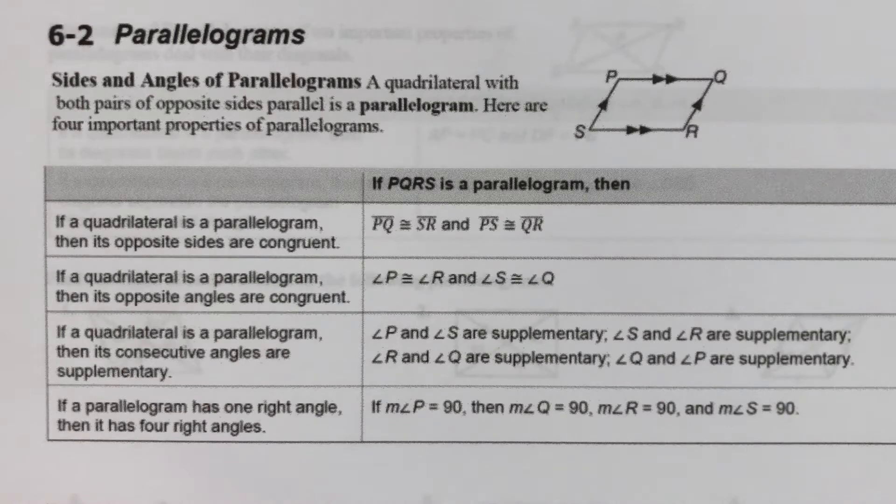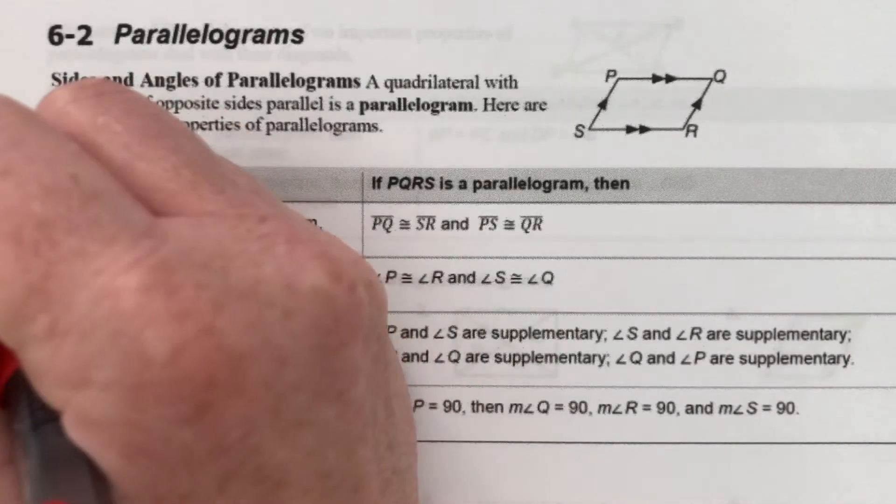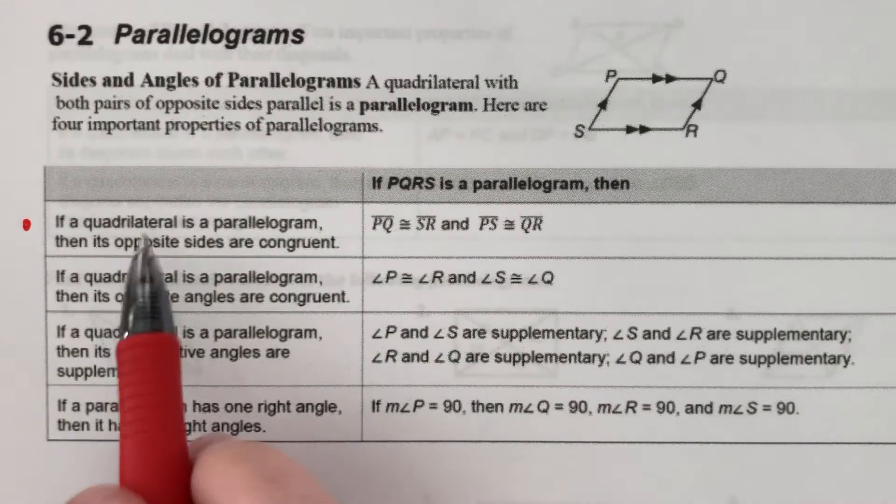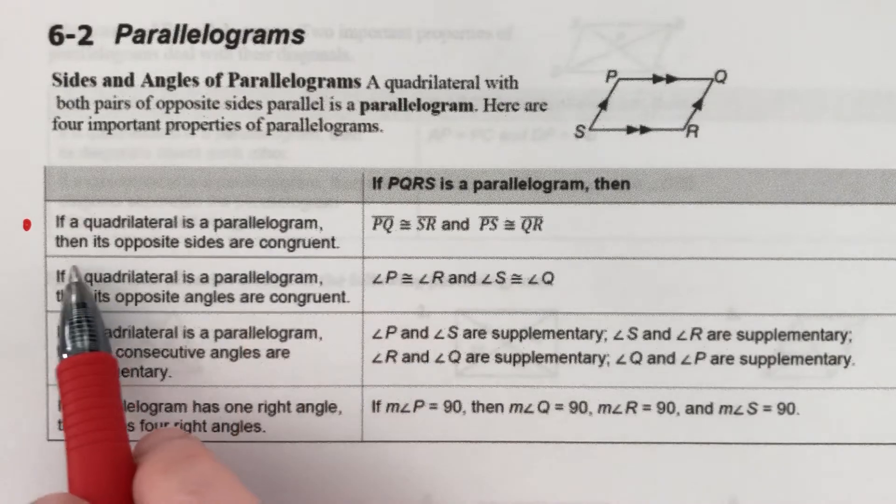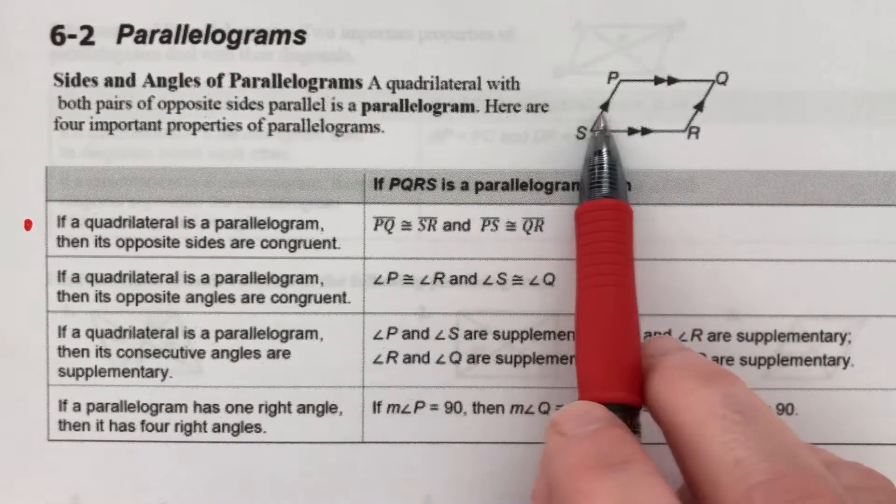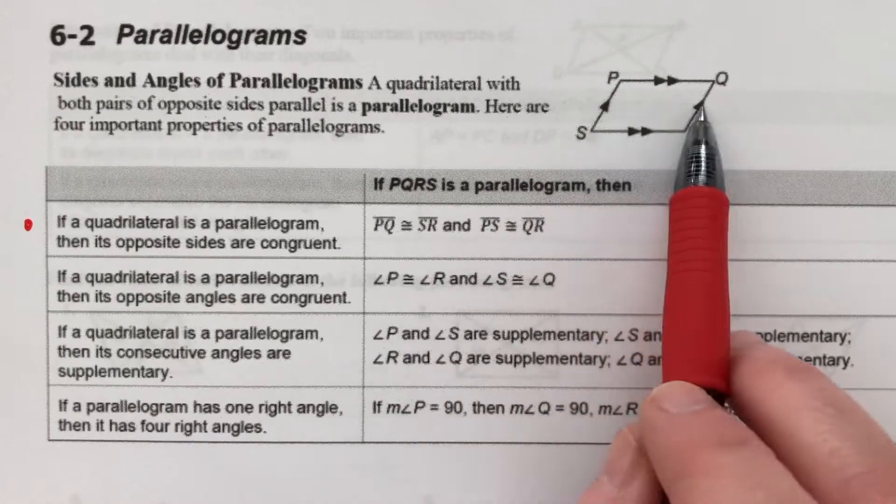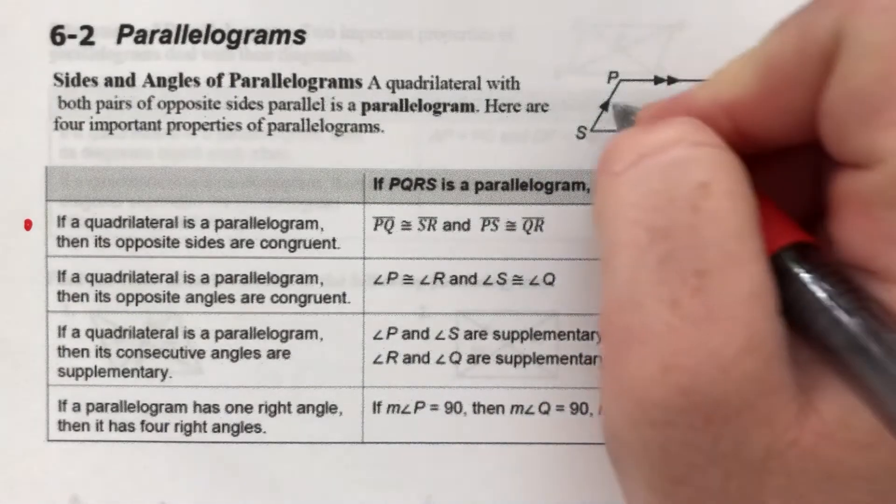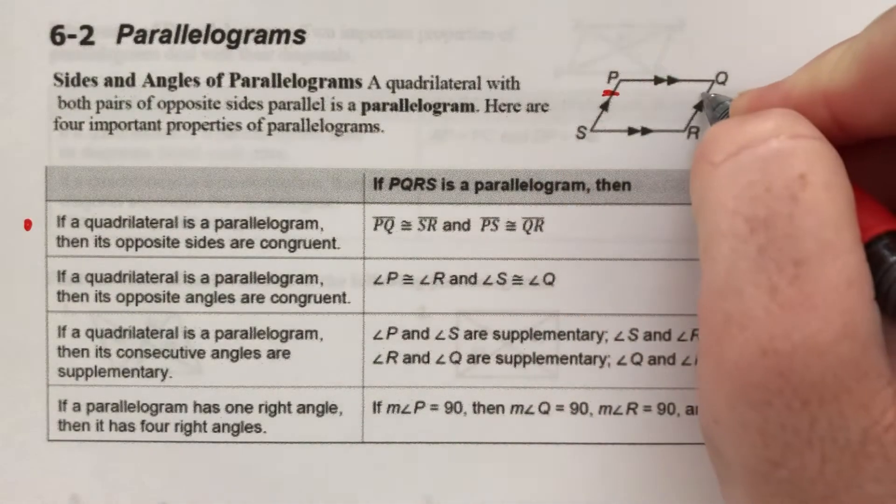Here are four important properties of parallelograms. We're actually going to go over six total today in this lesson, but here's the first four. The first one says, if a quadrilateral is a parallelogram, then its opposite sides are congruent. So not only are opposite sides parallel, they are also the same size.